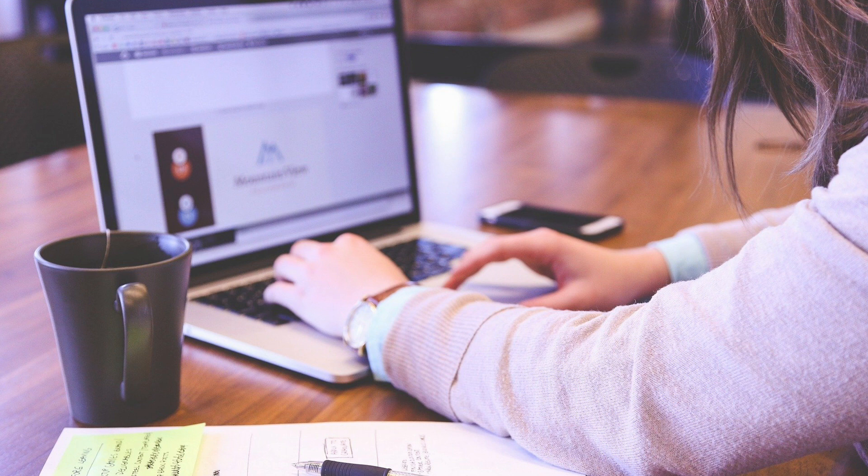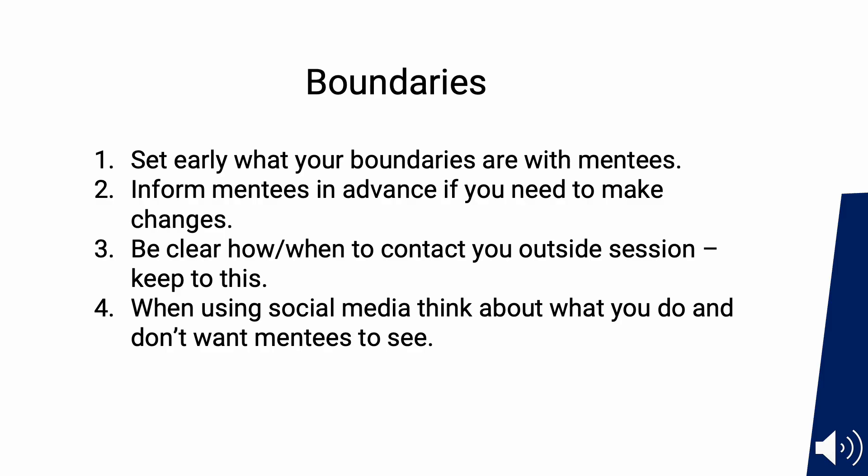Setting boundaries. Remember, this is a position of responsibility, but it's not a 24/7, always-on, always-checking-for-email-and-messages service. You do not have to reply straight away. Set early what your boundaries are with the mentees — not only preferred ways to contact, but also times of day. For example: 'I'll get back to all messages or email once a week on Wednesday afternoon', or 'I'll reply on Tuesdays and Thursdays', or 'I won't check my WhatsApp after 10pm local time.' Inform your mentees in advance if you need to make changes. Be clear how and when to contact you outside of an agreed meeting. And when using social media, think about keeping your mentoring separate and what you are happy with your mentees seeing.